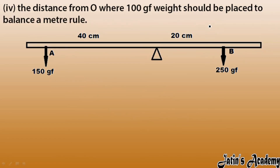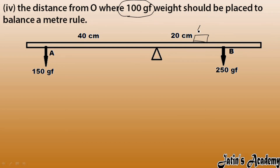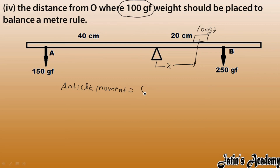Next, we find the distance from O where 100 gram force should be placed to balance the meter rule. Since the anti-clockwise side has 6000 and the clockwise side has 5000, we place the 100 gram force on the clockwise side at distance x. Applying the principle: anti-clockwise moment equals clockwise moment. So 150 × 40 equals 100 × x plus 250 × 20.